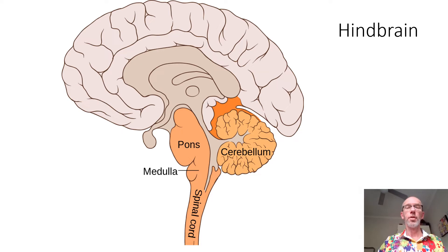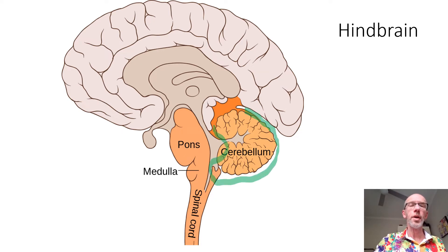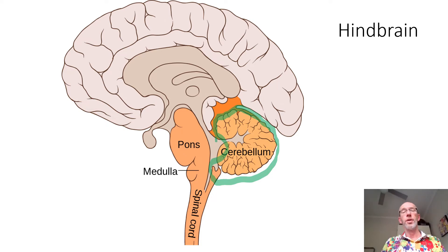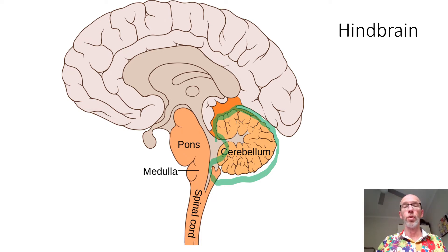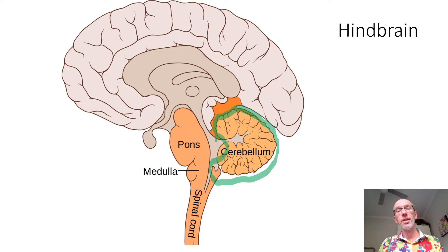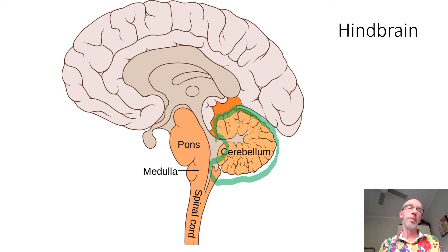So the hindbrain. Let's start with the cerebellum at the back here. It plays a key role in your balance and posture, particularly important when you're on the move. Also the mechanics of speech and motor learning — your ability to learn a sequence of movements through practice and repetition. More about this next year when you're doing unit three or four psychology.